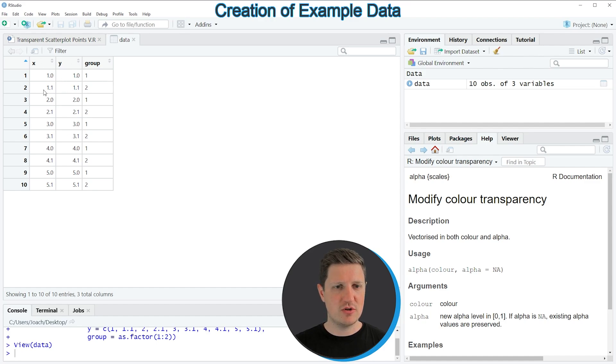So as you can see, our data contains 10 rows and 3 columns, whereby the first two columns, X and Y, contain numeric values, and the third column is a group indicator which contains the grouping value 1 or 2 to identify two different groups in our data.